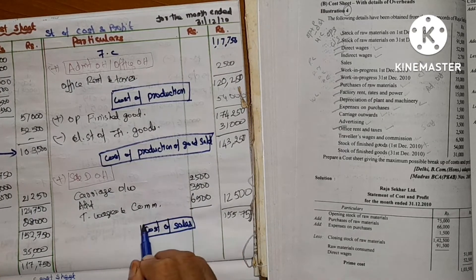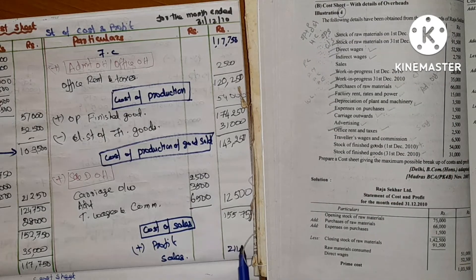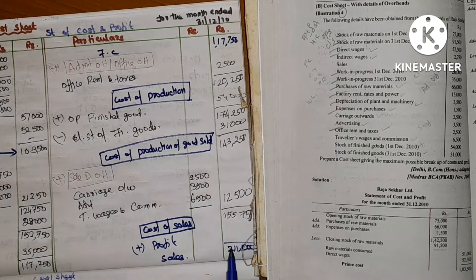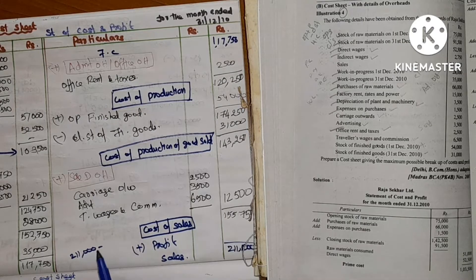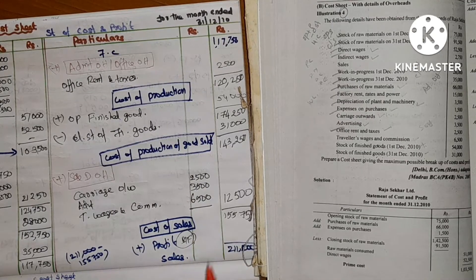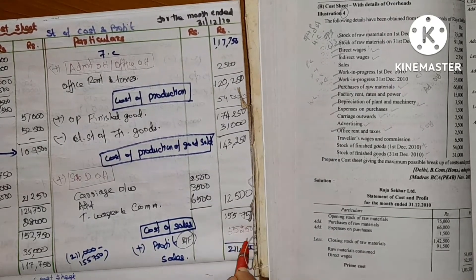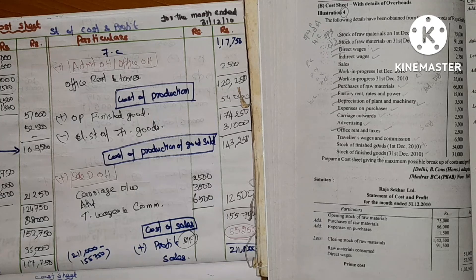Cost of sales is 1,55,750. Sales figure is 2,11,000. Profit is Sales less Cost of Sales. This gives us our profit, and this completes our cost sheet.